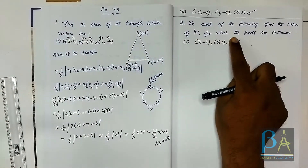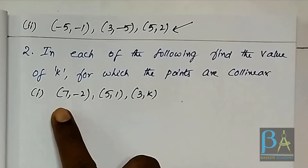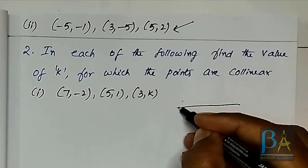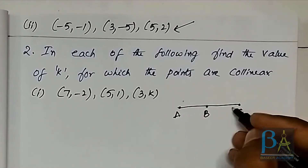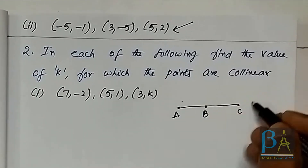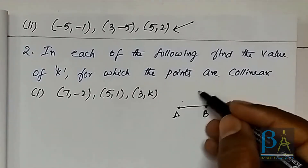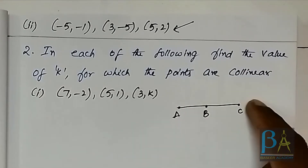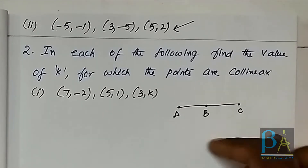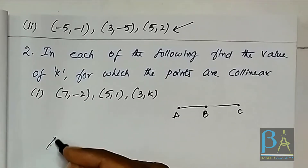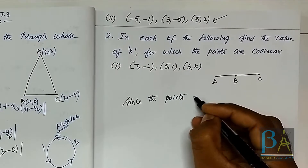Now the second question says: find the value of k for which the points are collinear. Points lying on the same line are known as collinear points. If these three points are collinear, they lie on the same line and do not form a triangle, so the area of the triangle is going to be zero.